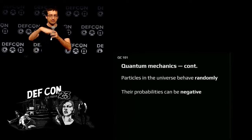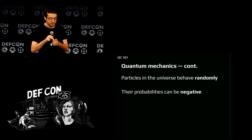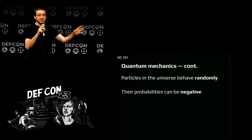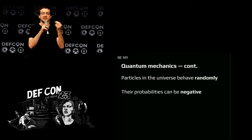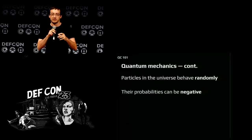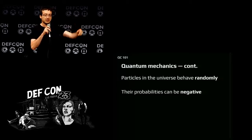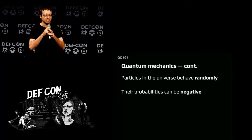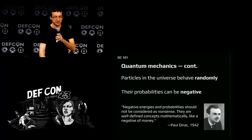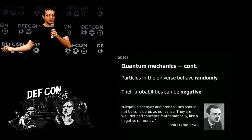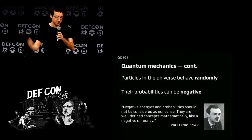This is my only slide about quantum mechanics, so it's the most important thing for us. What it says is that particles in the universe — like photons, electrons, and so on — they behave randomly. Not randomly in the sense of unpredictable because we don't know all the parameters, but truly randomly — you have no way to predict what's going to happen. What's different from the randomness you know is that the probabilities can be negative — and not only negative, but complex numbers, numbers with the i.